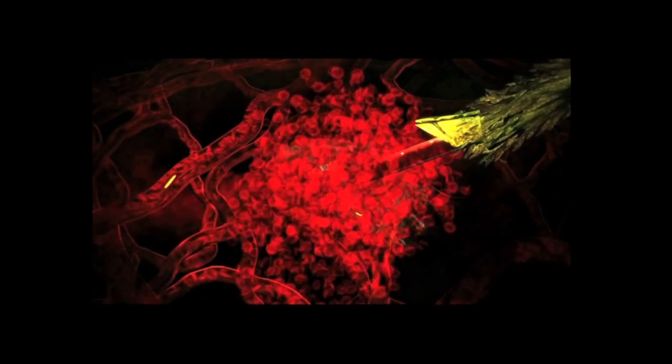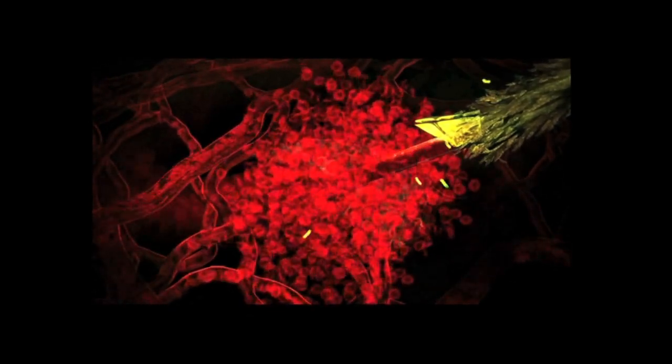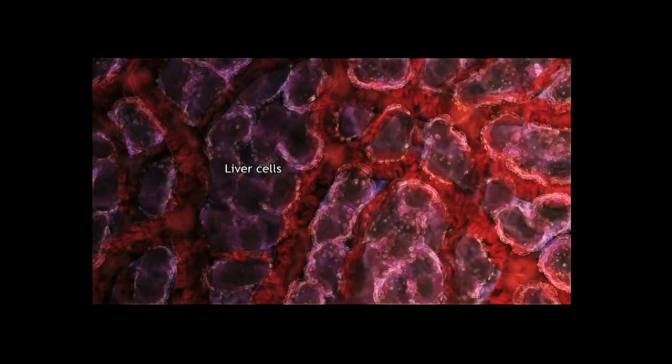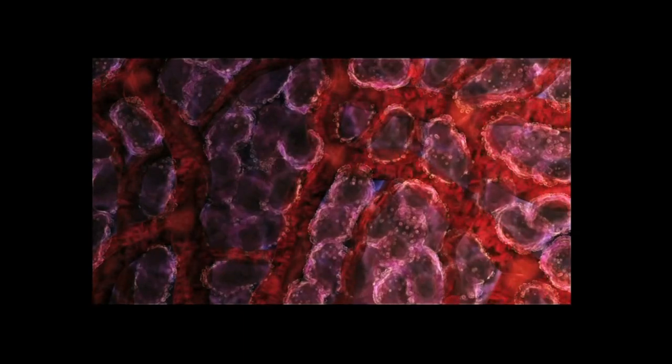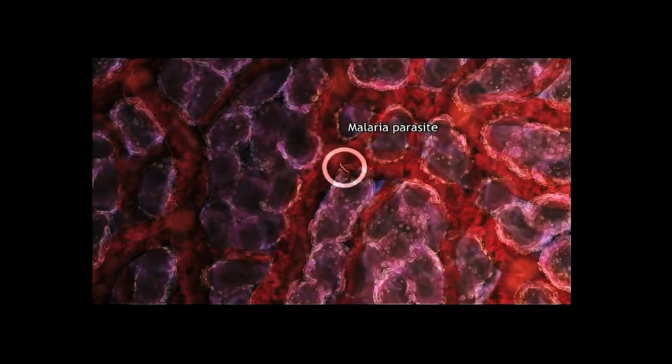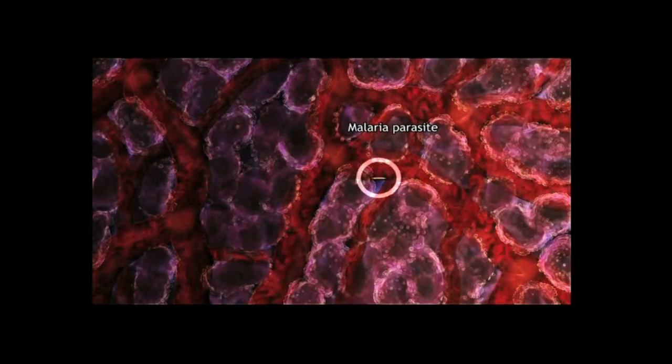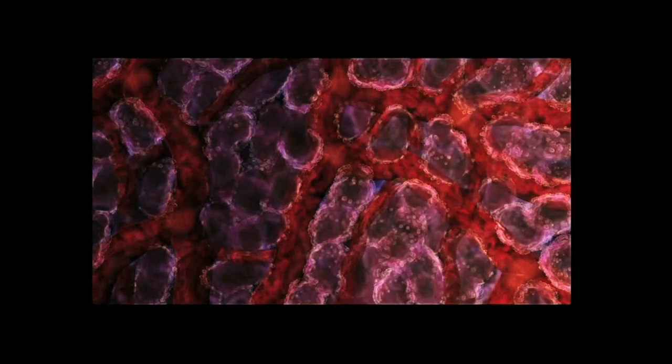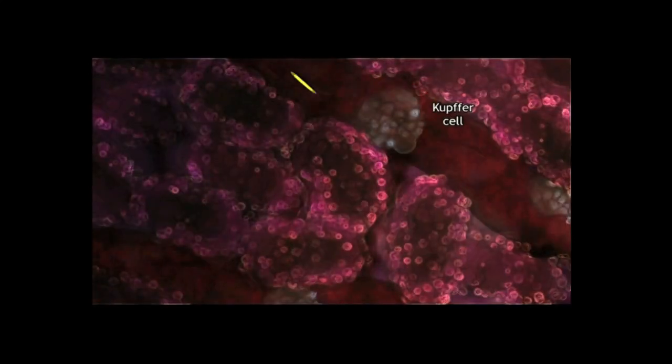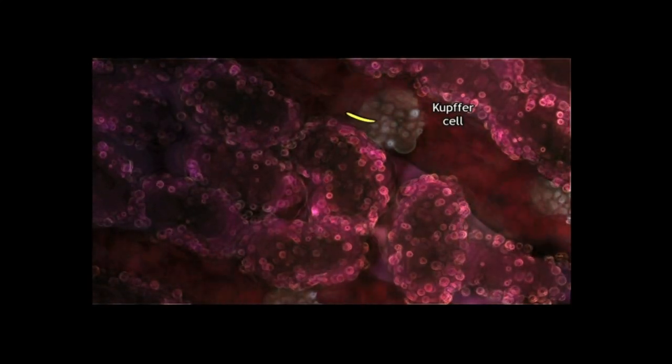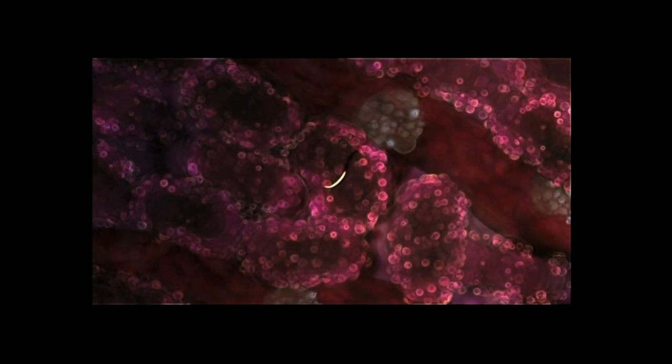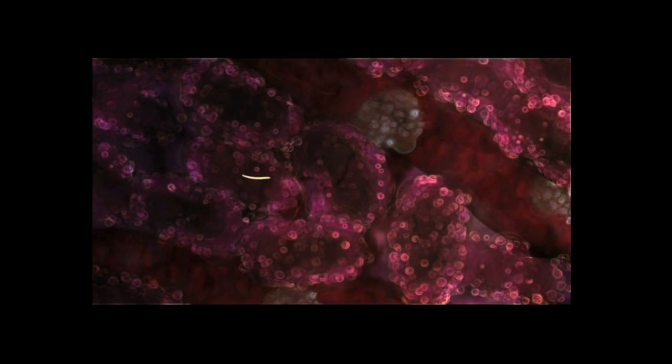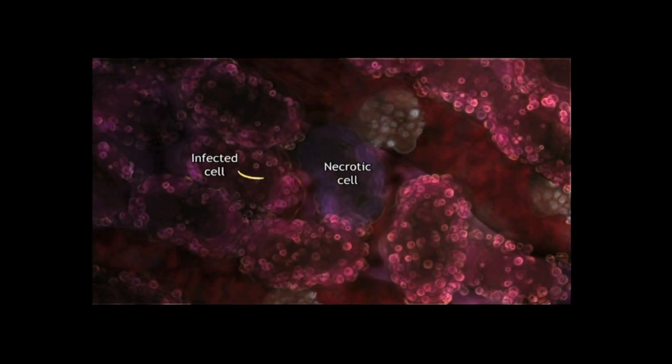The parasite rides the blood stream like a network of roads seeking its first target, the core of your body's blood filter system, the liver. Sensing its arrival of the liver, the parasite searches for an exit. A sentinel kupfer cell is the entry point to liver tissue. Leaving the blood, the parasite infects a liver cell, killing one or more other cells on its way.